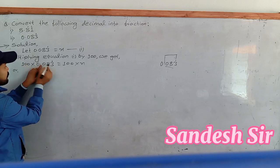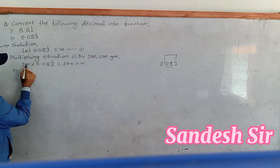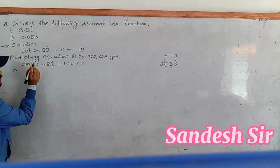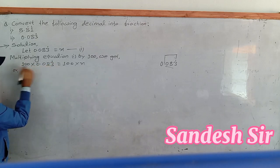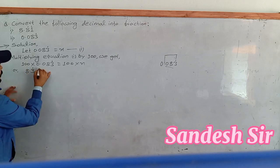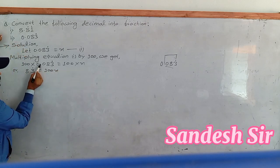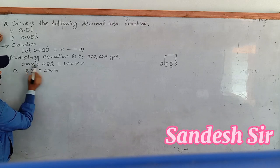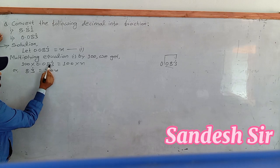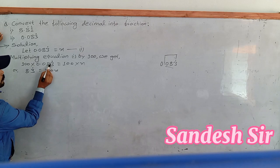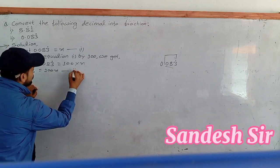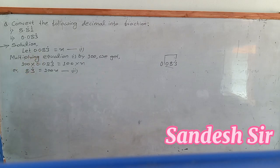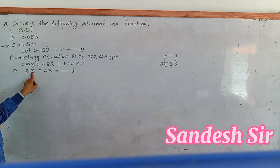The decimal 0.083 repeating — the repeating part has digits. This line equals 0.083 repeating. Let's call this our first equation: x equals 0.083 repeating. The second equation: 1000x equals 83.3 repeating, since there are three digits involved.